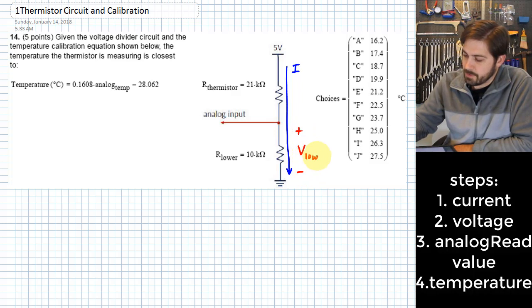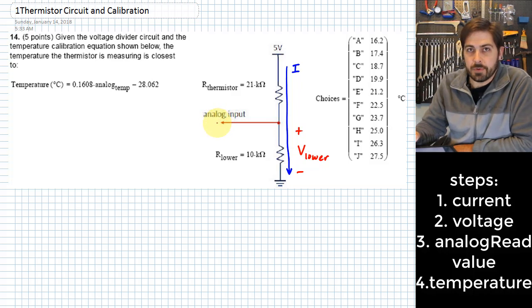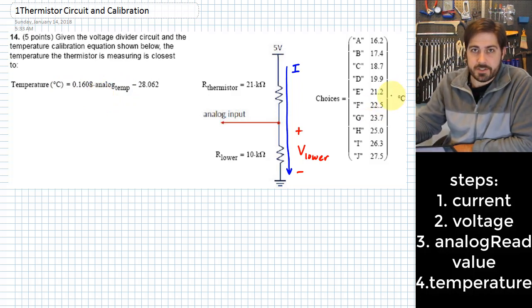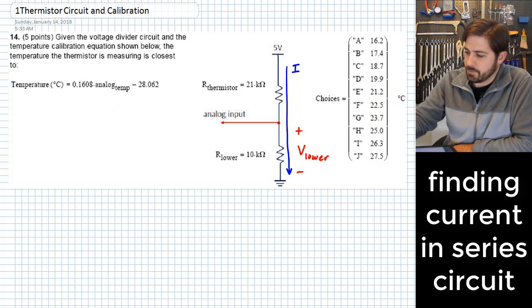we can use that current to figure out the voltage that goes across this lower resistor, which I'll label V sub lower. Once I know that voltage, I can use it to figure out what kind of number would come into the Arduino as that analog read value. And when I know the analog read value, I can use it in this temperature equation to find temperature, which is what the problem is asking for. So those are the general steps, and we'll get started now.